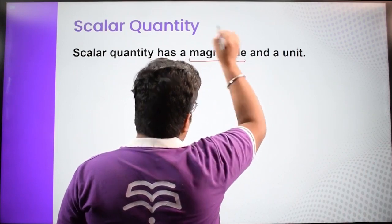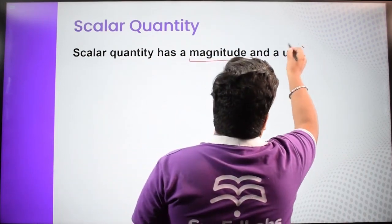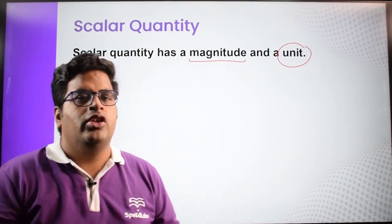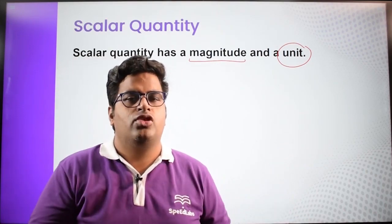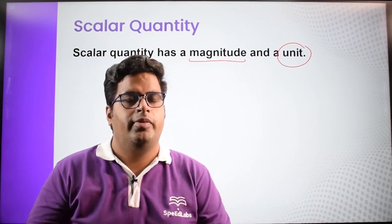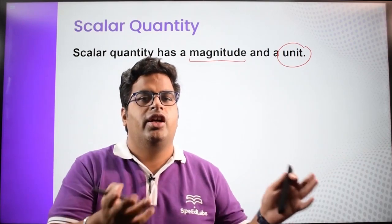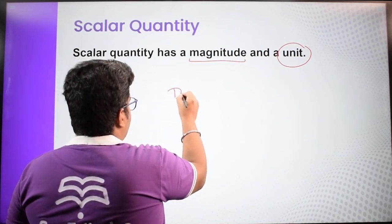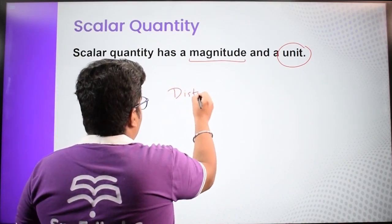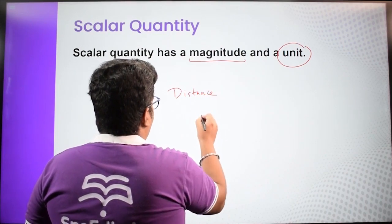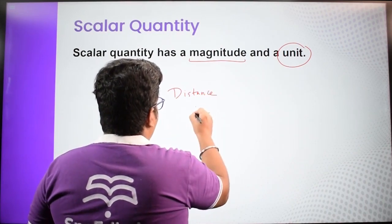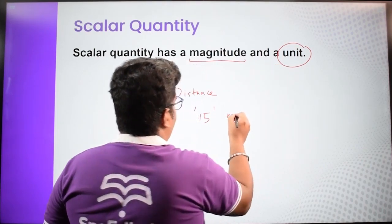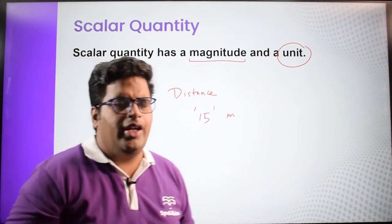A scalar quantity is defined as a quantity which has only magnitude, and of course it will have a unit. For example, distance is measured in meters — say 15 meters or 20 meters. Here 15 and 20 are the magnitudes. So distance is a scalar quantity; it has magnitude and a unit such as meter, centimeter, or millimeter.